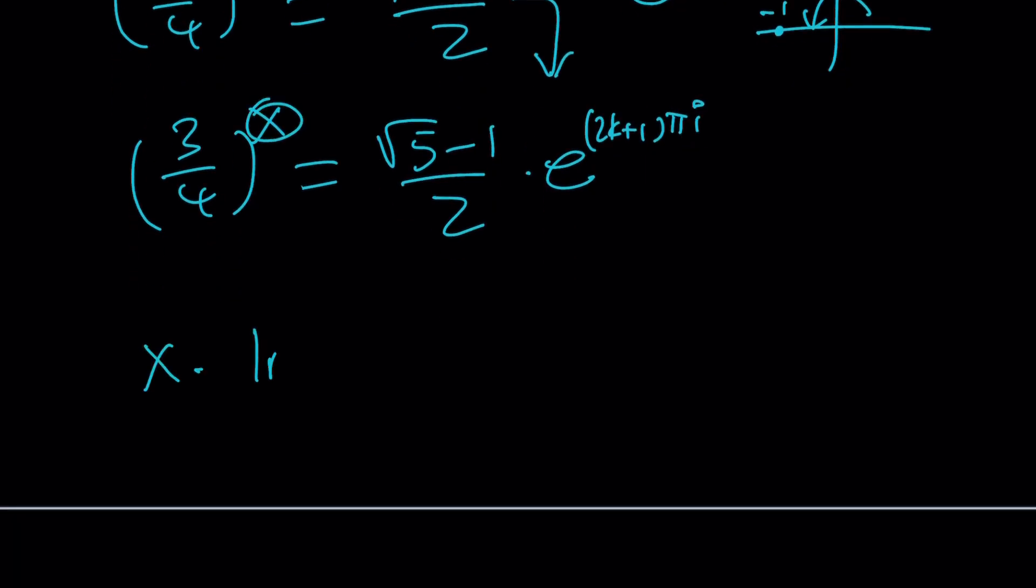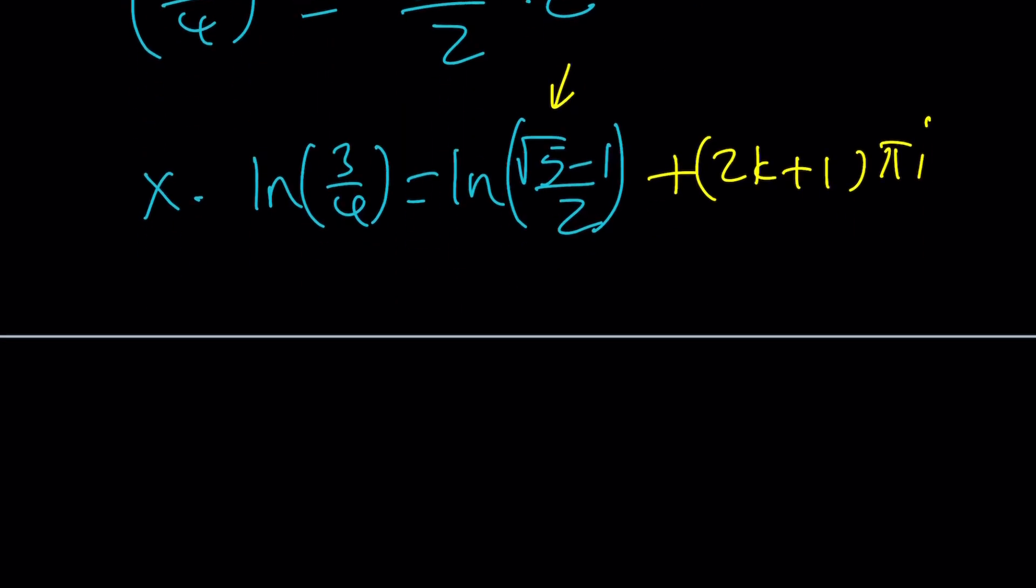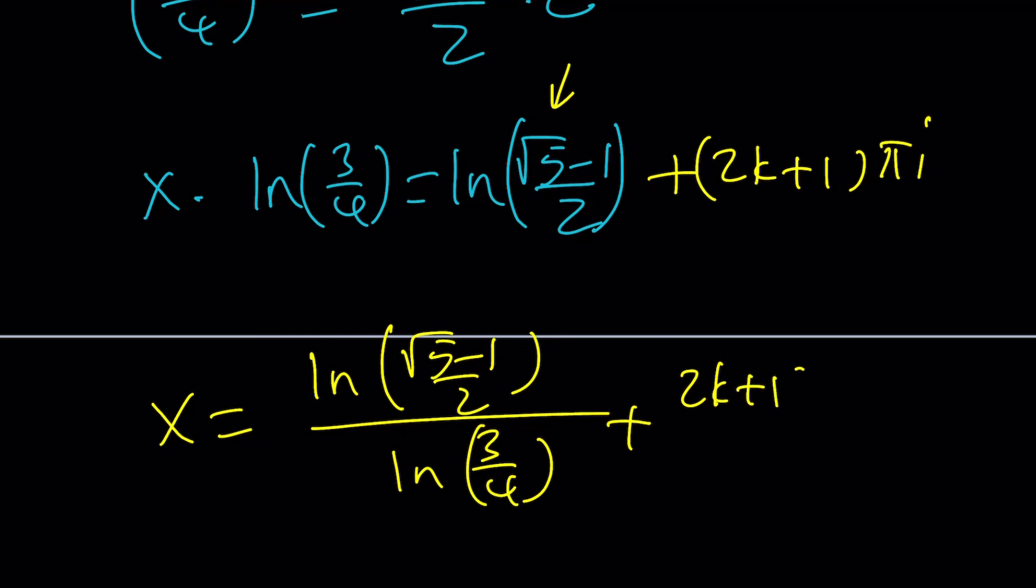But, when you ln both sides, you're going to get x times ln 3 fourths is equal to ln root 5 minus 1 over 2. By the way, notice that this is well-defined because this is the ln of a positive quantity, which is important. That's the real value. Plus, 2k plus 1 times pi i. And, then, when we do the division, it's going to look like this. ln root 5 minus 1 over 2 divided by ln 3 fourths plus 2k plus 1 times pi divided by ln 3 fourths multiplied by i, which is going to give you the real part and the imaginary part separately.